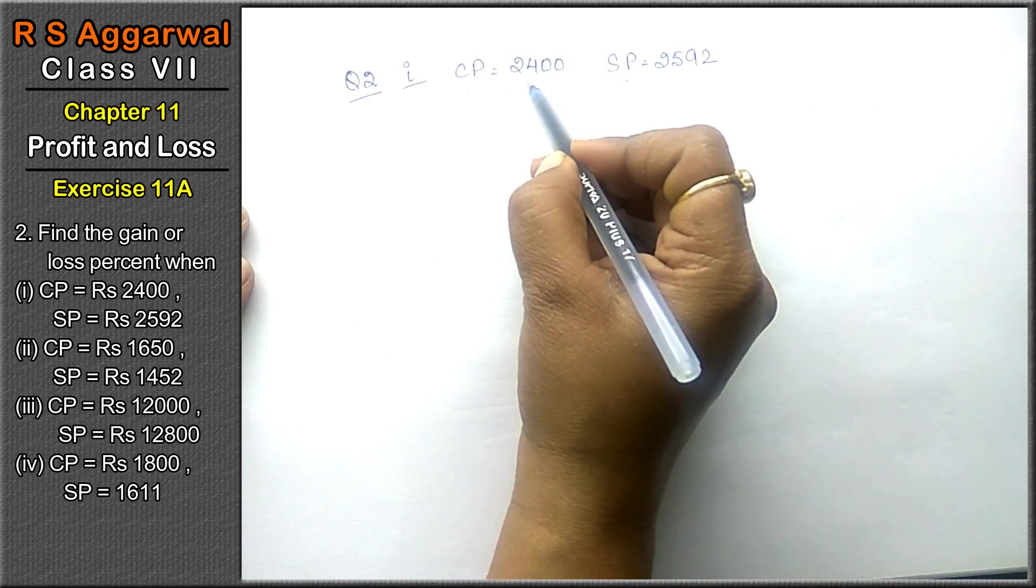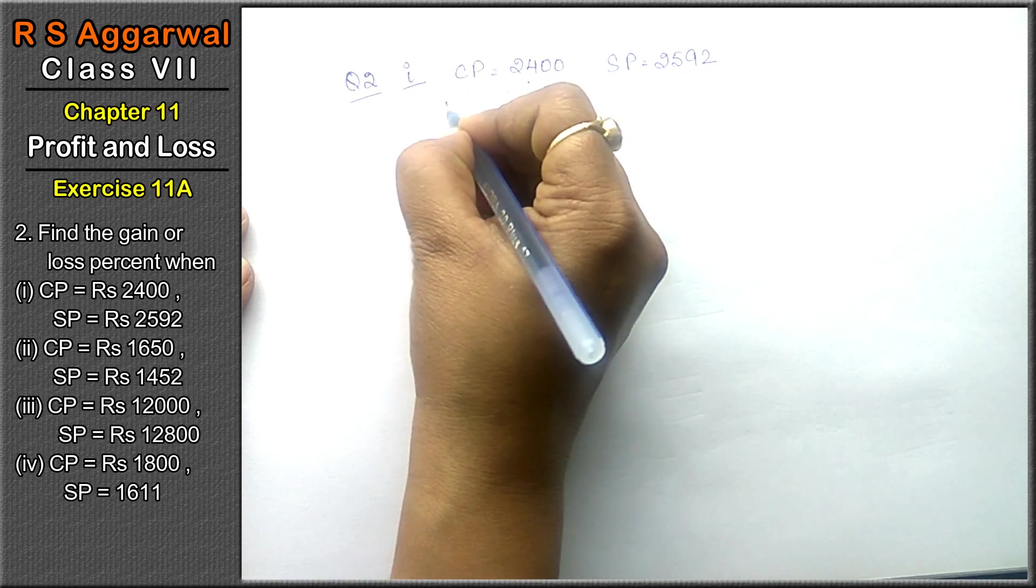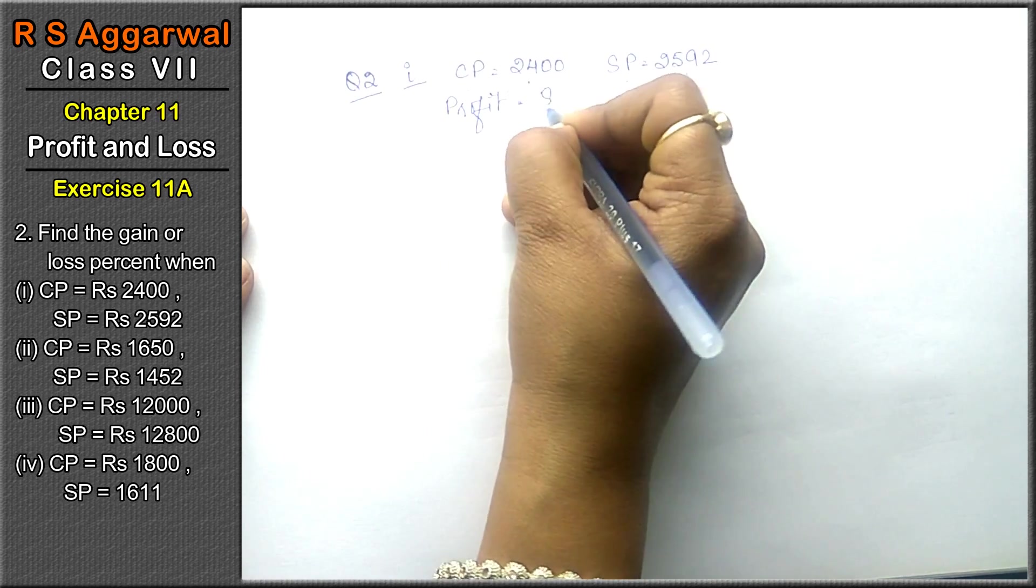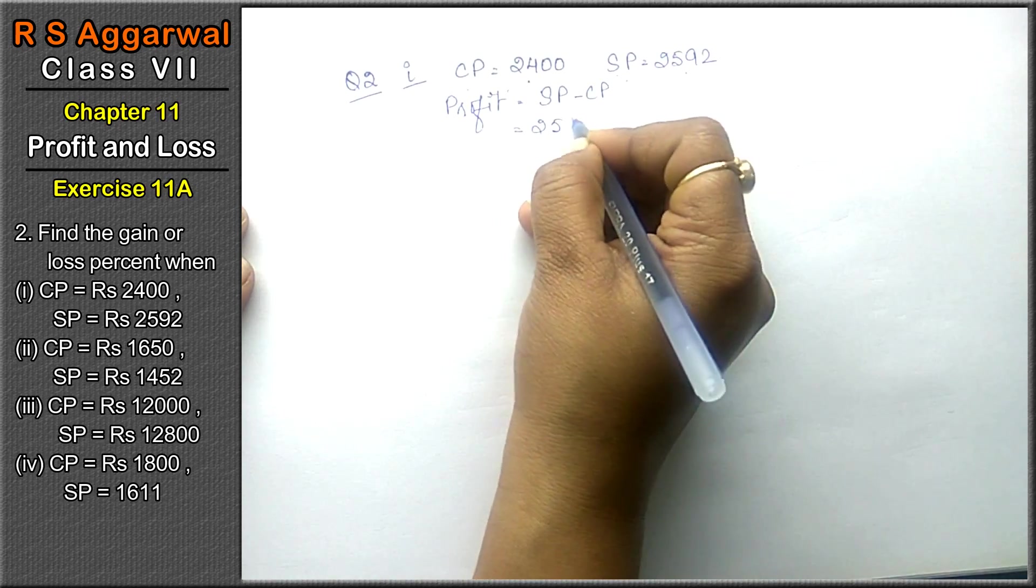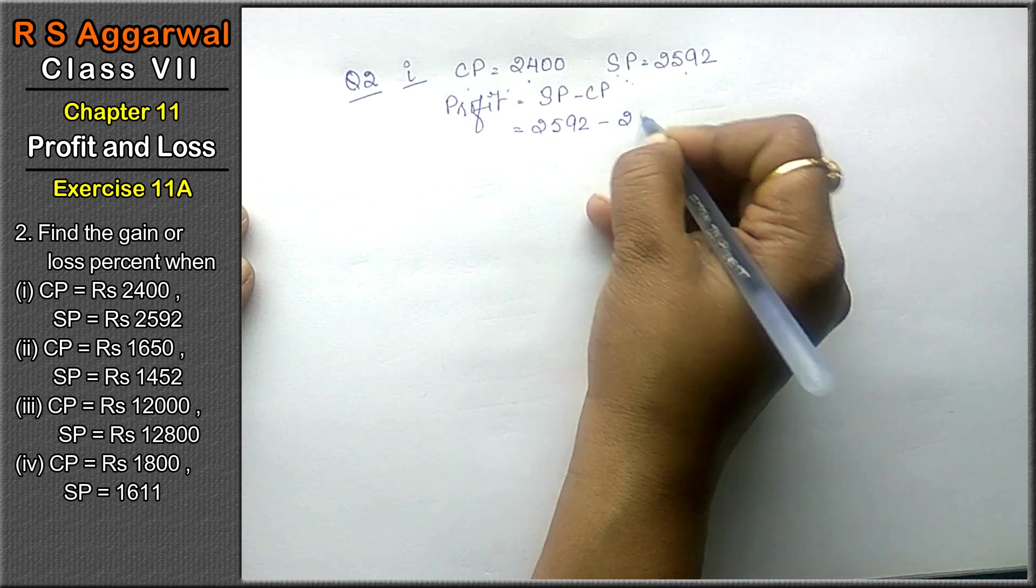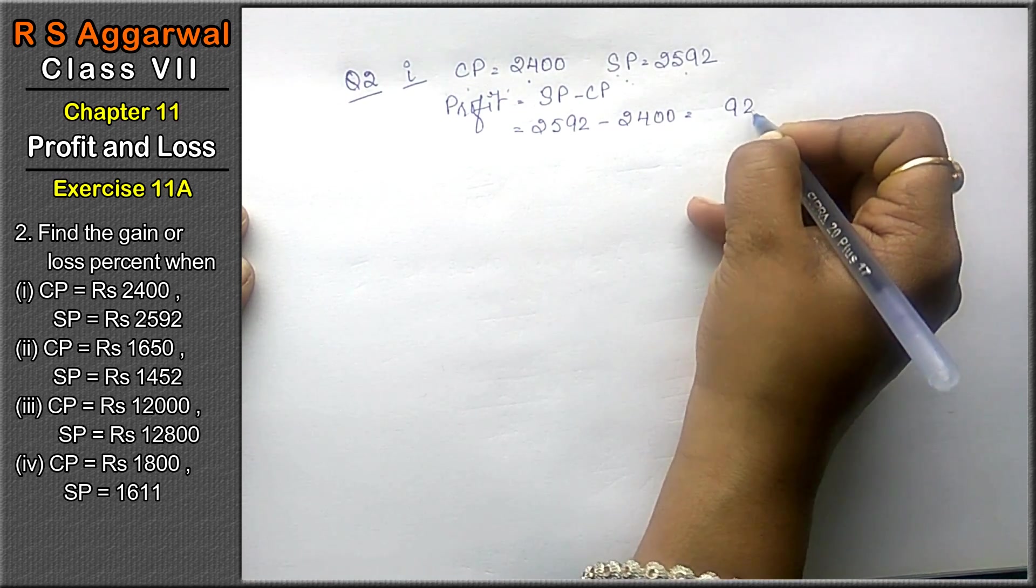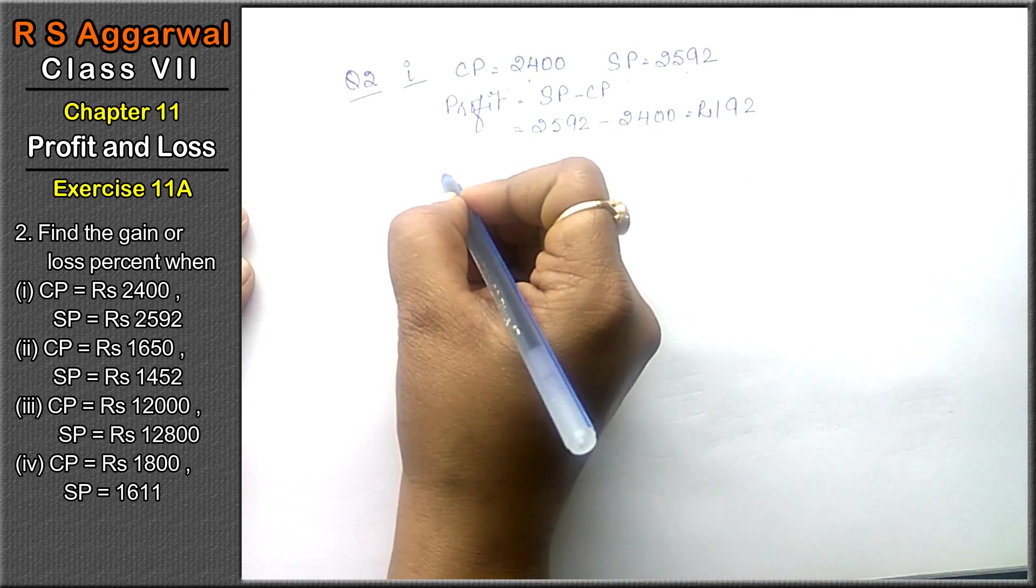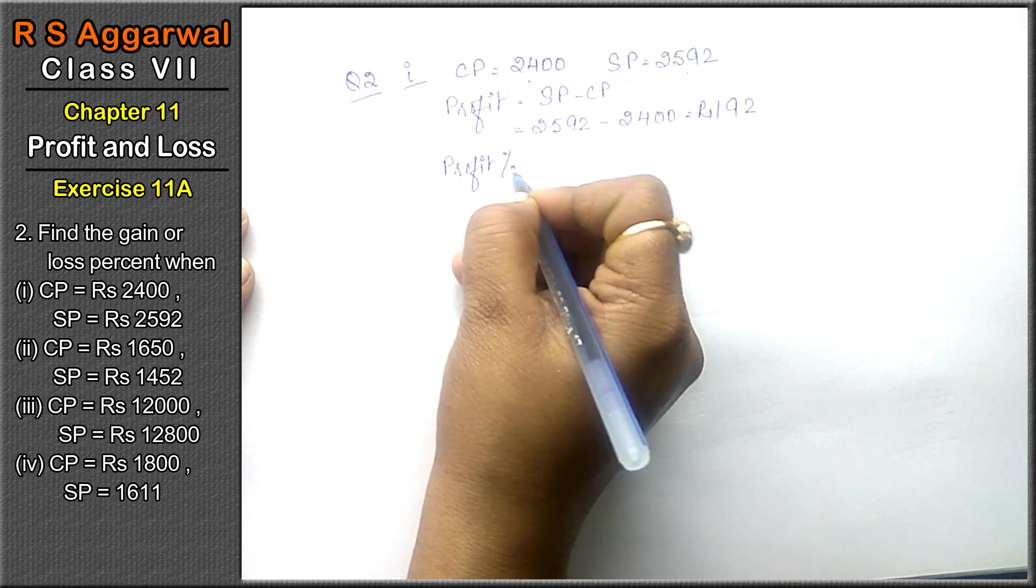Now CP is 2400 and SP is more than that, which means we are getting profit. Profit formula is SP minus CP. Now SP is 2592 minus 2400, the answer will be 192 rupees profit.